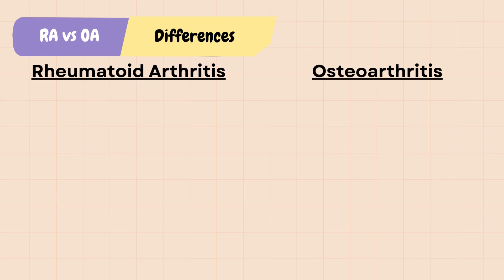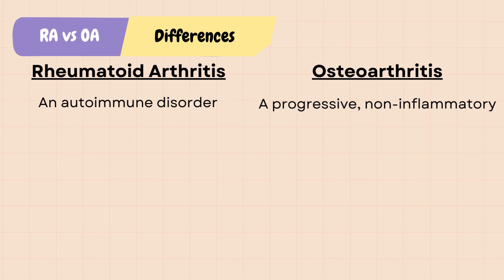RA and OA both cause joint swelling, stiffness, and pain. RA is an autoimmune disorder in which the immune system attacks the synovial membrane in the joints, leading to cartilage destruction and bone erosion. While osteoarthritis is a progressive, non-inflammatory degeneration of the cartilage due to excessive stress on the joints from daily wear and tear.